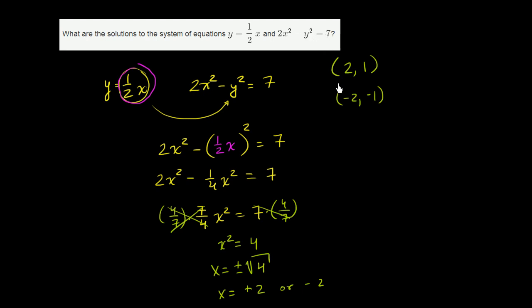So the solutions to the system of equations, one is the coordinate 2 comma 1, x is 2, y is 1. The other is the coordinate negative 2, negative 1. x is negative 2, and y is negative 1.